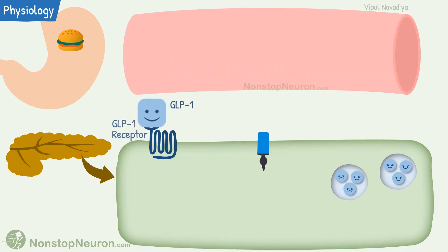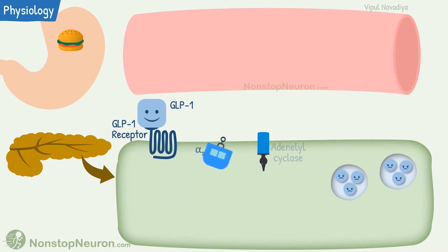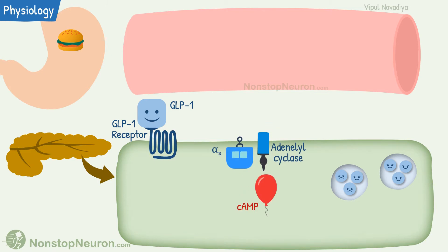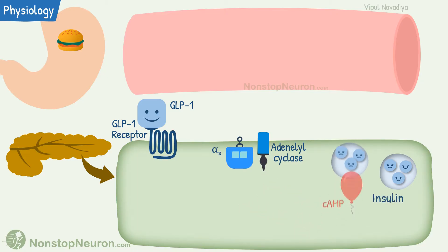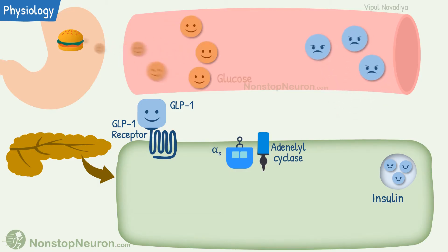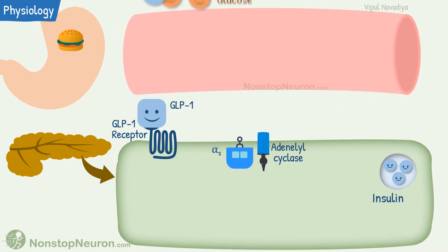GLP-1 acts on GLP-1 receptors found on beta cells of the pancreas. This GLP-1 receptor is a Gs protein-coupled receptor. Its stimulation causes activation of adenylyl cyclase, which converts ATP into cyclic AMP. Increased cyclic AMP causes release of insulin, which takes care of the glucose that came with the food.